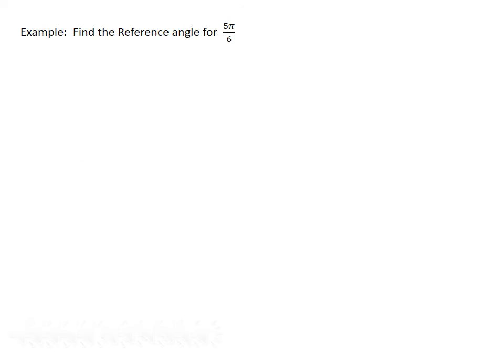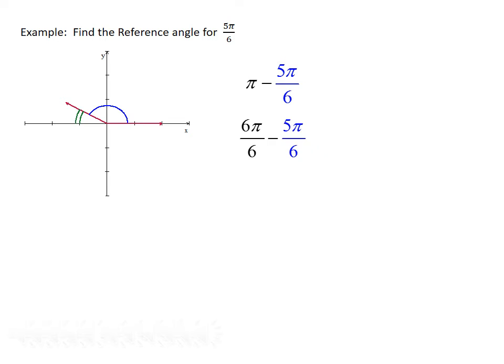Let's find the reference angle for 5π/6. Sketching 5π/6, we see it goes just short of the left-hand side of the x-axis, landing in quadrant 2. The reference angle is between the terminal side and the left side of the x-axis (represented by π). So we compute π minus 5π/6. Writing π as 6π/6, we get 6π/6 minus 5π/6, which yields a reference angle of π/6.